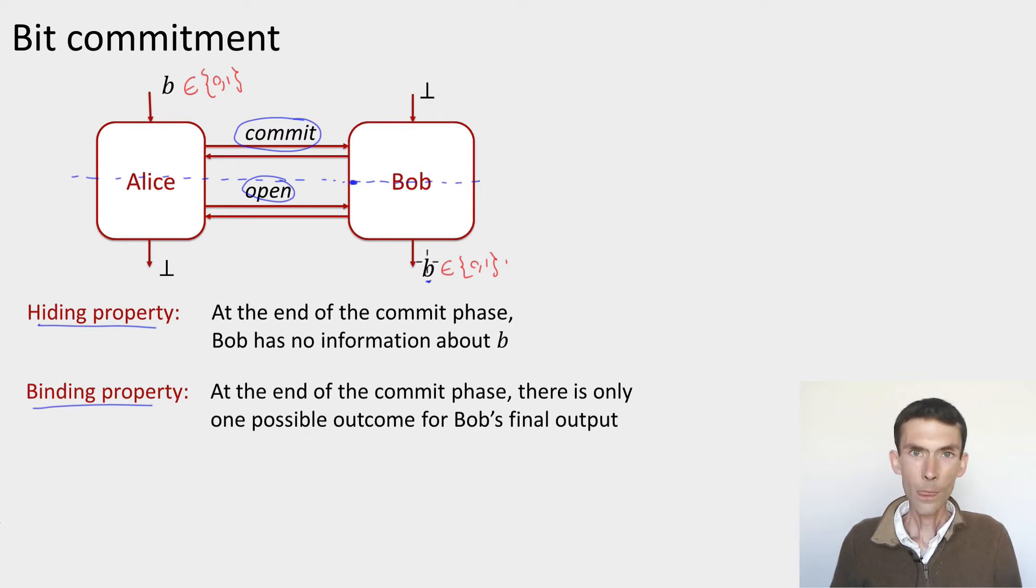So why study bit commitment? Well, two things. As we already saw a few modules ago, oblivious transfer can be used to implement any multi-party function. So oblivious transfer implies bit commitment. In that sense, it's a weaker primitive. And if oblivious transfer is impossible, maybe bit commitment would be possible.